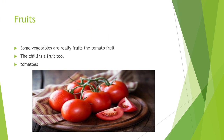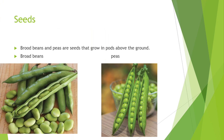Tomato is a vegetable as well as a fruit. Chili is also considered a fruit. In the seeds category, broad beans and peas are seeds that grow in pods above the ground. These are both seeds.